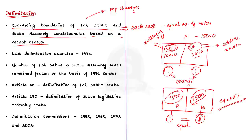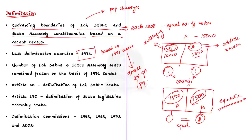Delimitation is not a frequent process. The last time it happened in India was in 1976, when boundaries were redrawn based on the 1971 census data. After that, a decision was made to freeze delimitation for 25 years, to allow time for population growth rates to level out between different states. The freeze was due to imbalances in population growth between northern and southern states.